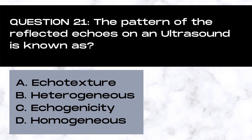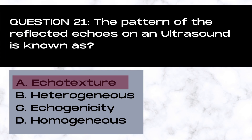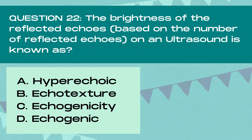Question 21. The pattern of the reflected echoes on an ultrasound is known as: A. Echotexture, B. Heterogeneous, C. Echogenicity, or D. Homogenous. And the answer is A. Echotexture. Echotexture compares the pattern of brightness levels within a mass. A mass with even brightness levels within is known as homogenous. A mass with an uneven pattern of brightness levels inside the mass is known as heterogeneous.